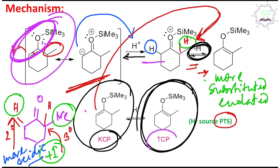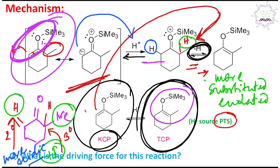And the other one is the TCP — thermodynamically controlled product. Why? Because the double bond is more substituted. According to Zaitsev's rule, more substituted alkenes are more stable. So this product is more stable. This is the overall reaction.